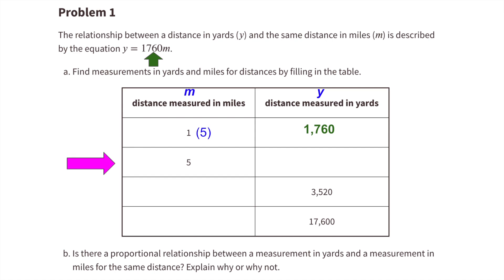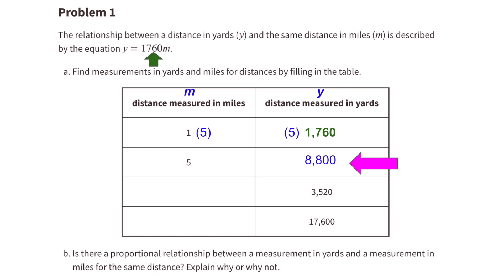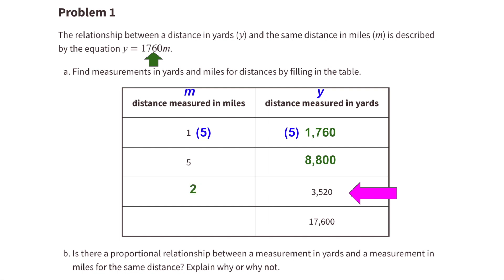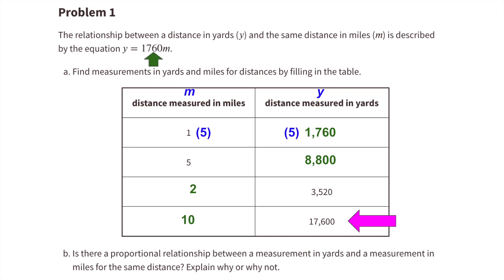1 times 5 equals 5, and 1760 times 5 equals 8800, so there are 8800 yards in 5 miles. 3,520 yards divided by 1,760 equals 2, so every 3,520 yards there are 2 miles. 17,600 yards divided by 1,760 equals 10, so for every 17,600 yards there are 10 miles.